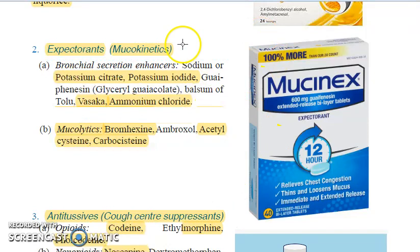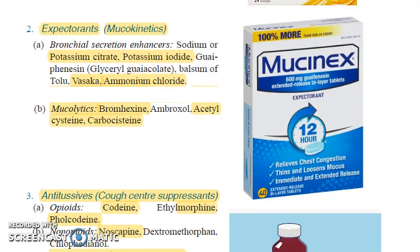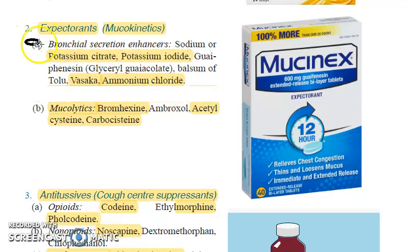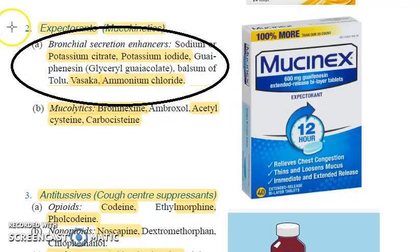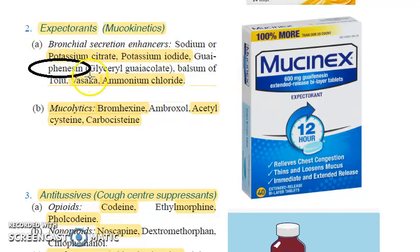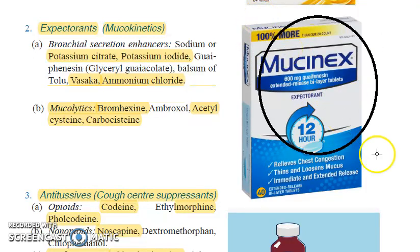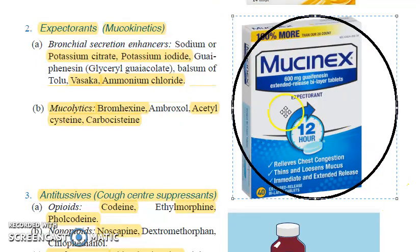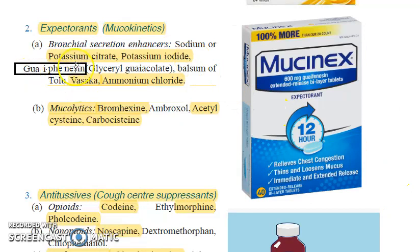Under expectorants you have bronchial secretion enhancers like vasaka, potassium citrate, potassium iodide, ammonium chloride, and guaifenesin. When I searched expectorants on Google, guaifenesin came up as important. Also balsam of tolu, vasaka, ammonium chloride. Then coming to mucolytics.